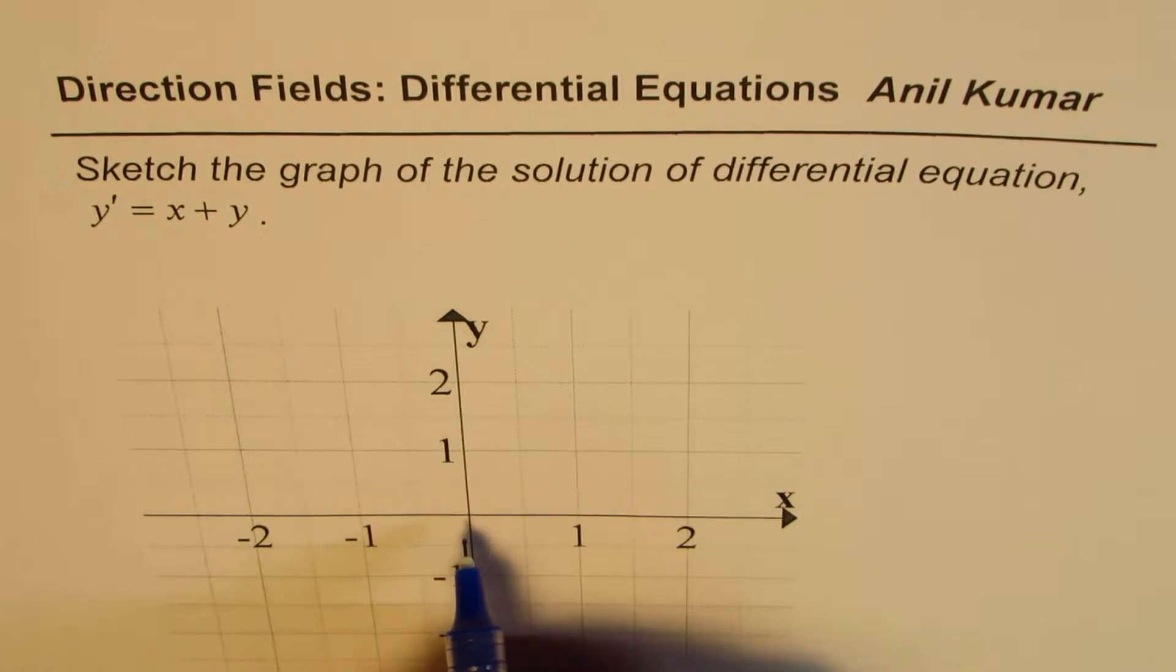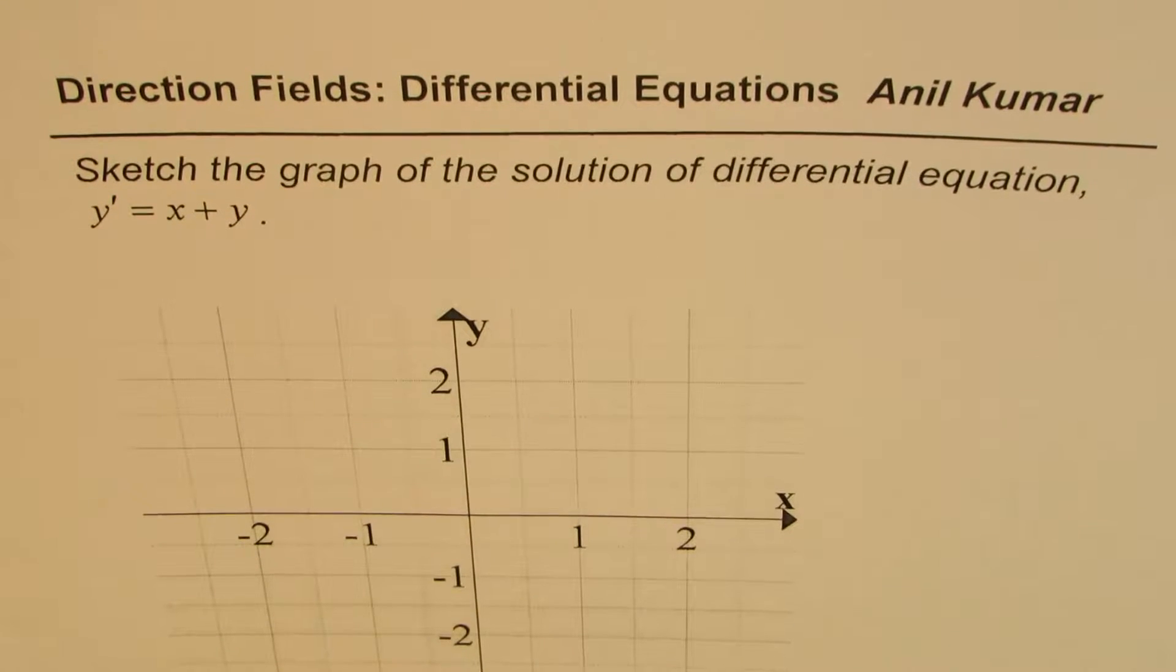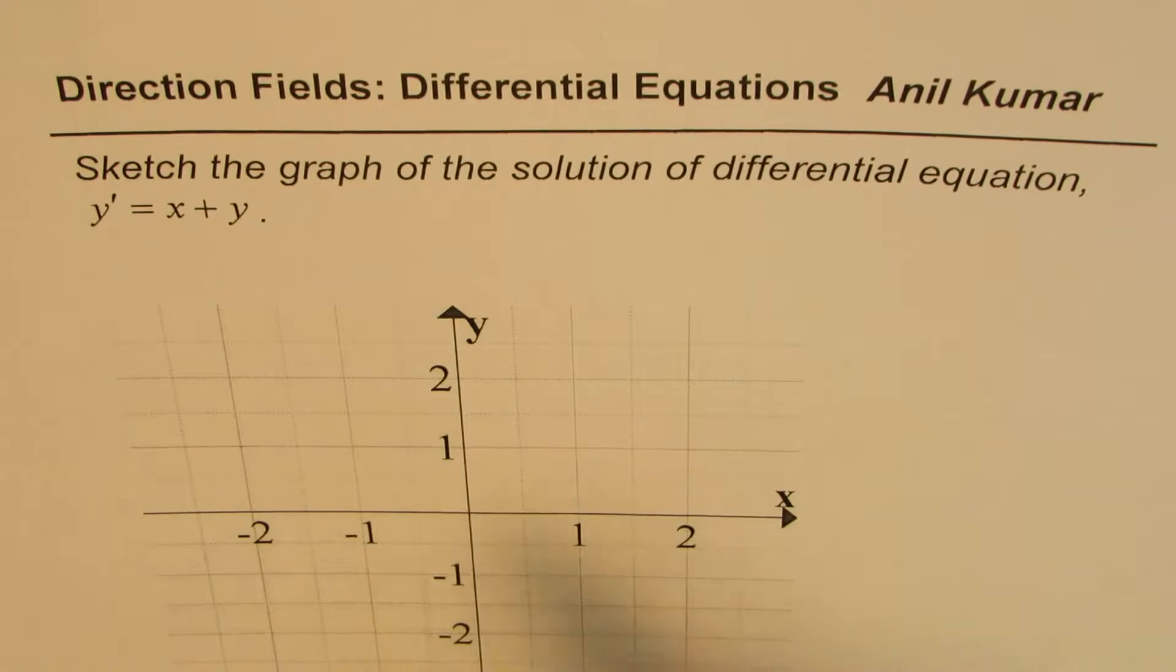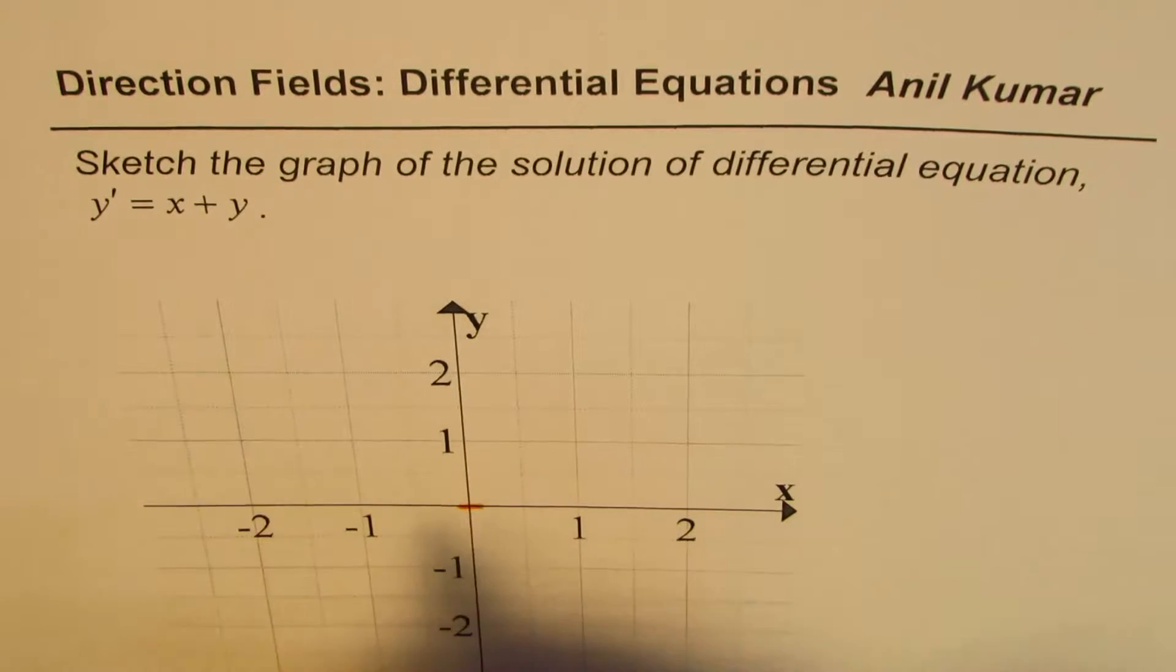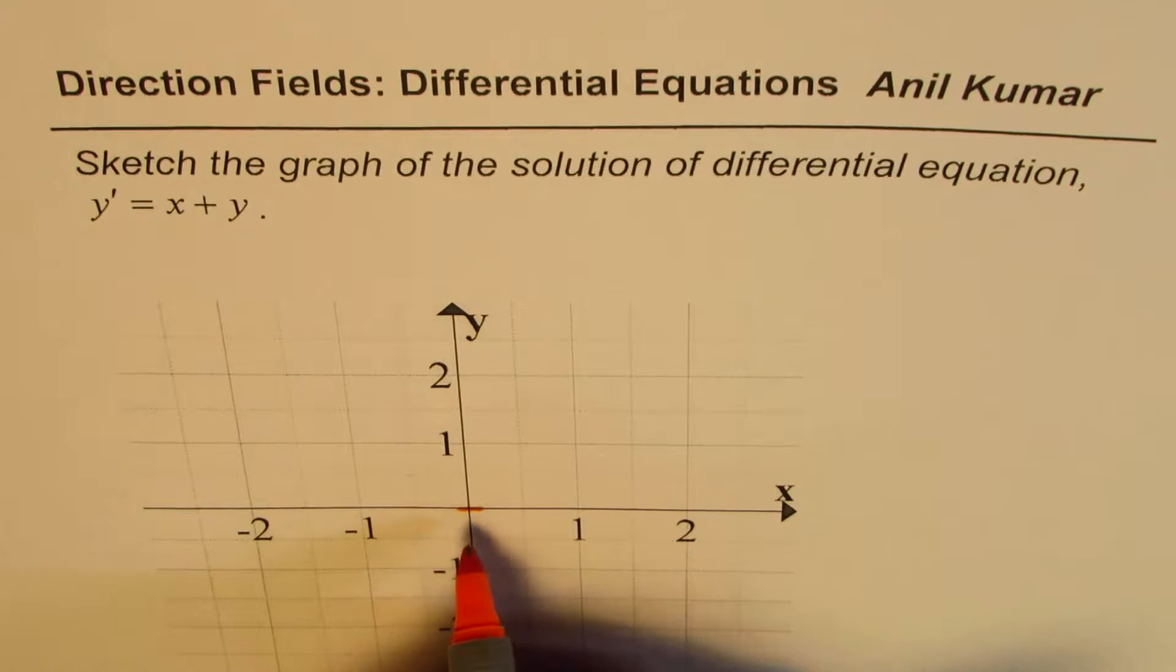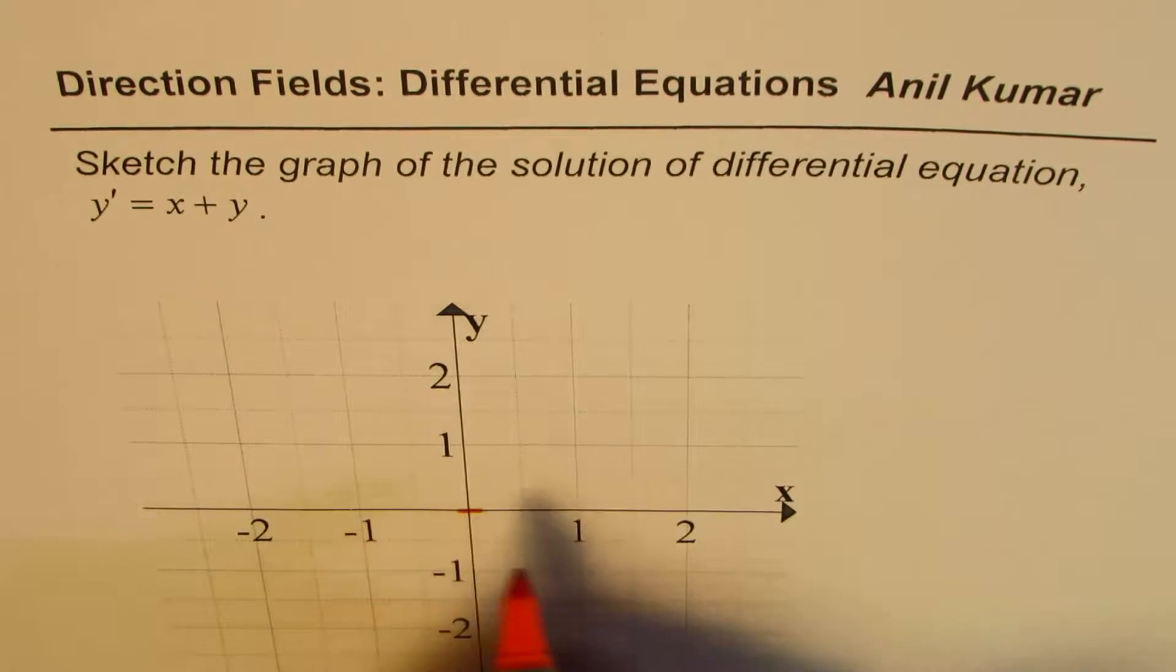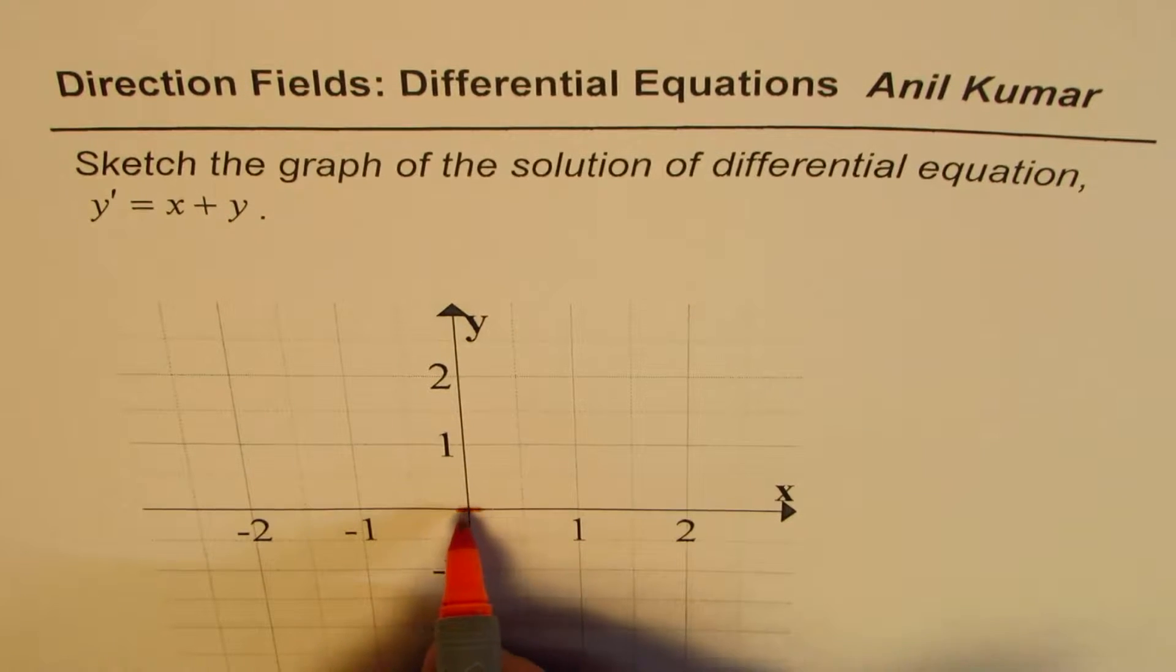So that means if you consider a point which is kind of origin, 0 plus 0 is 0. So slope of the graph at the origin will be 0, a horizontal line. So if I mark this small dash line here, it indicates that the graph of the solution of this differential equation should be horizontal when it is close to this point.